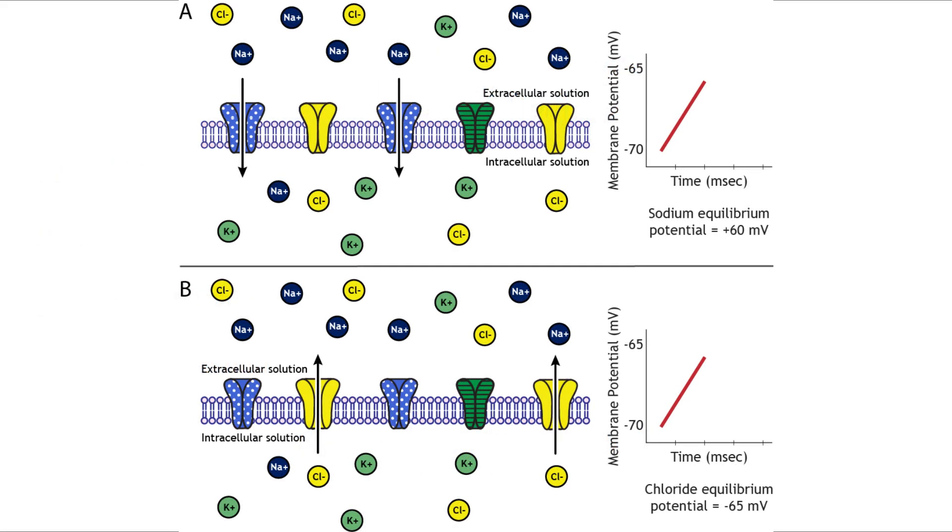Now, if a neuron's membrane potential differs from an ion's equilibrium potential, that ion will move through open channels to push the membrane potential closer to its own equilibrium potential. For example, if a cell is at minus 70 millivolts and sodium's equilibrium potential is plus 60 millivolts, the sodium will flow inward to drive the membrane potential upward. And in the second example you can see below, if chloride has an equilibrium potential of minus 65 millivolts and the neuron is at minus 70 millivolts, the chloride will exit, removing negative charge and nudging the cell potential towards minus 65 millivolts.